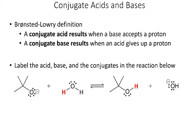The base turns into a conjugate acid in the products, and the acid turns into the conjugate base. What we want to do is practice labeling the acid, the base, and the conjugates in a reaction.